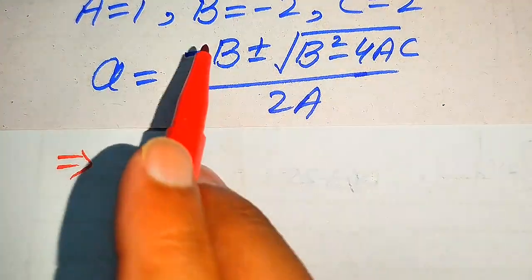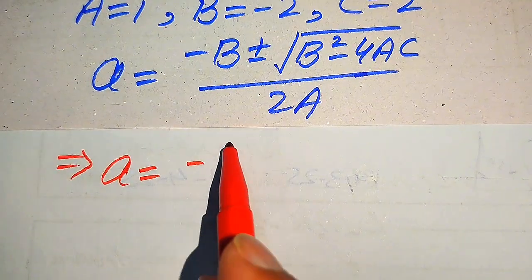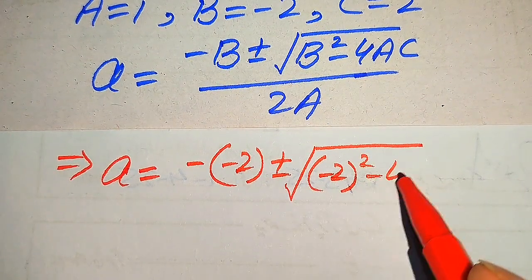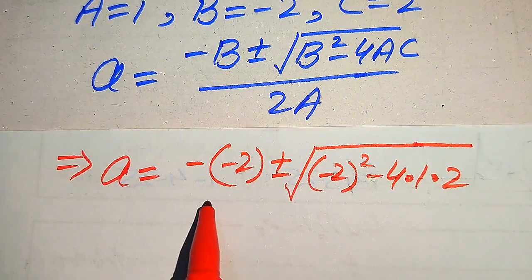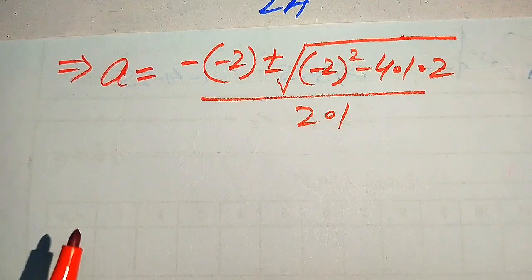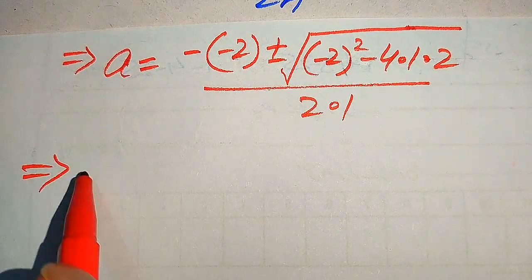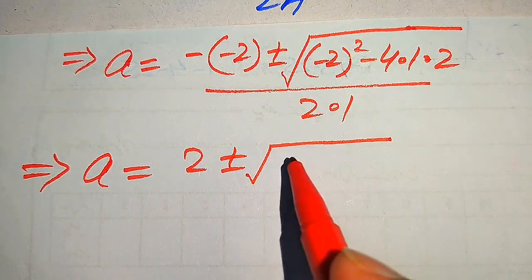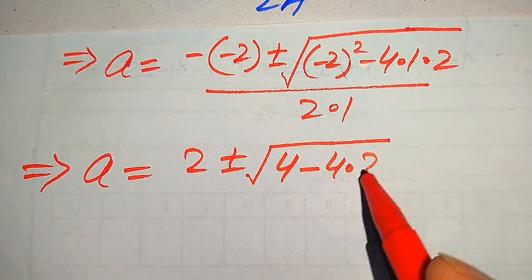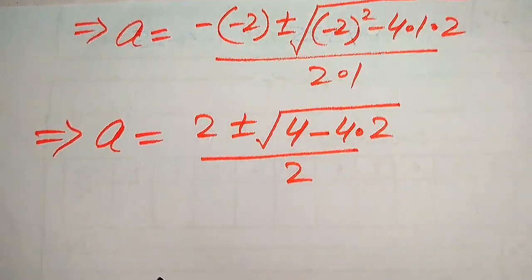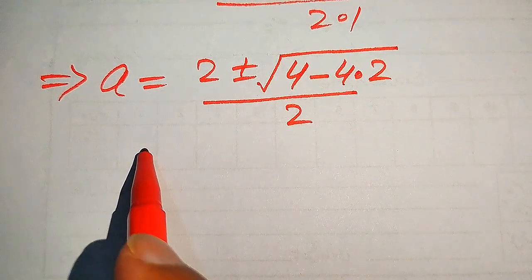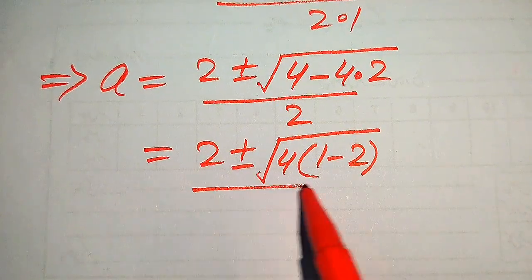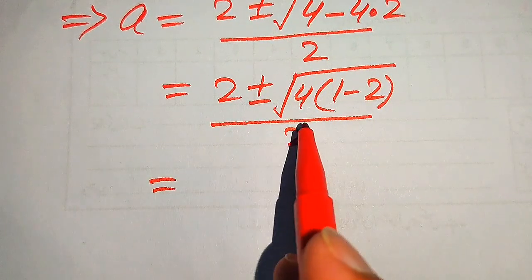Substituting the values: a equals minus(minus two) plus or minus square root of (minus two) squared minus four times one times two, divided by two times one. This simplifies to two plus or minus square root of four minus eight, divided by two, which is two plus or minus square root of (four times (one minus two)), divided by two.